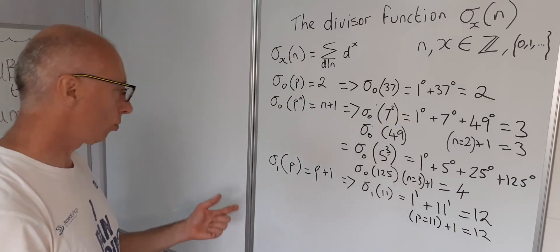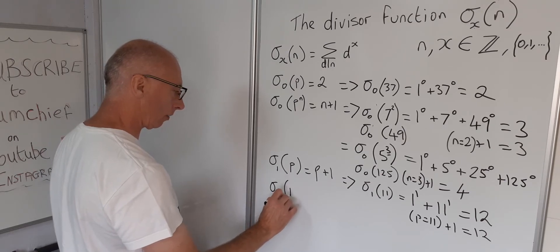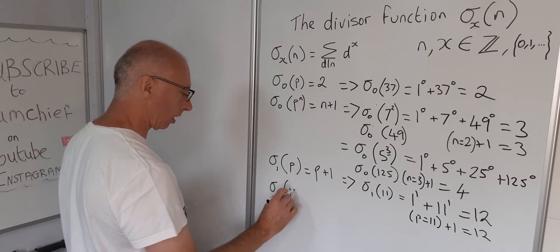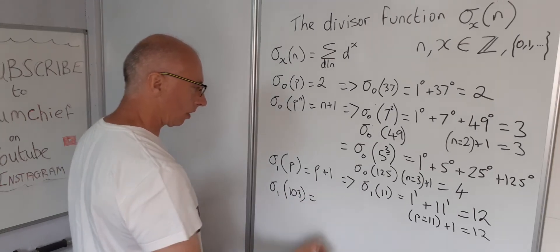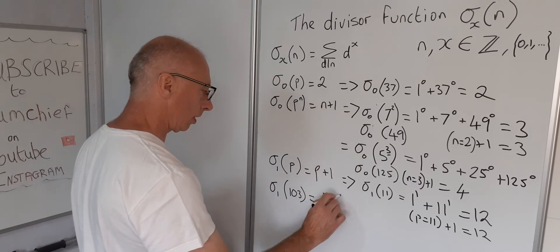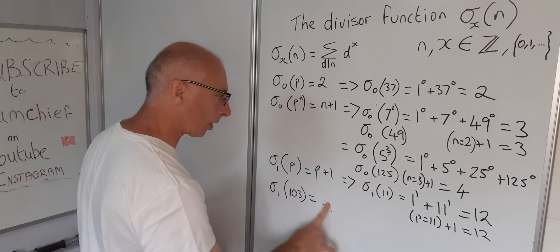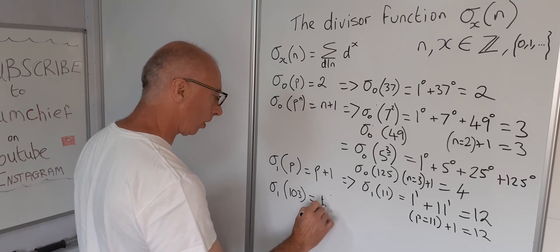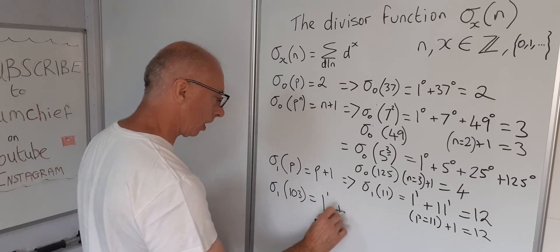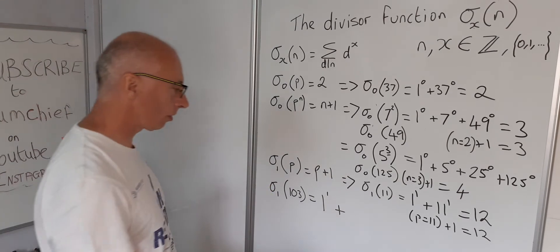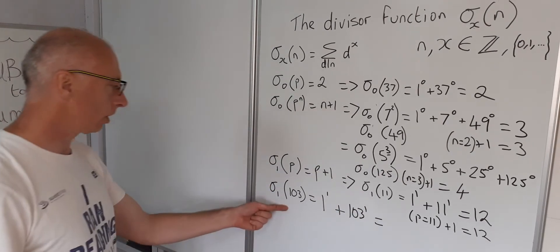Let's try one more example: sigma_1(103). The divisors of 103 are 1 and 103 itself, each to the power of 1, giving 1 plus 103 equals 104. This confirms the property p+1 = 103+1 = 104.